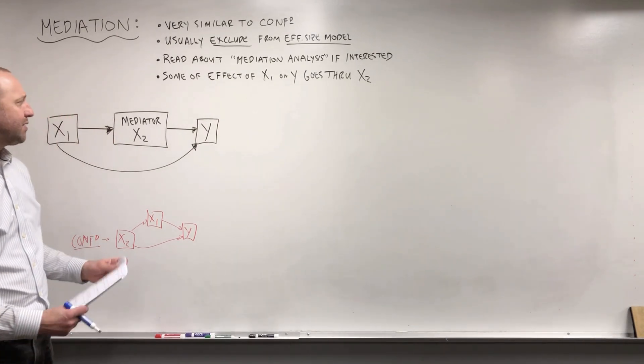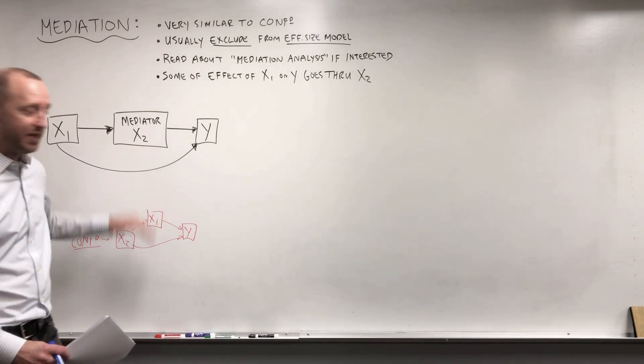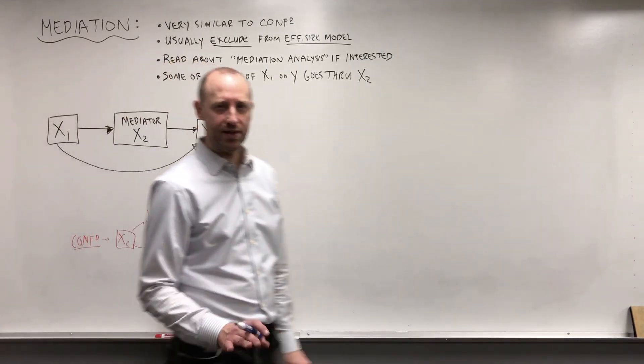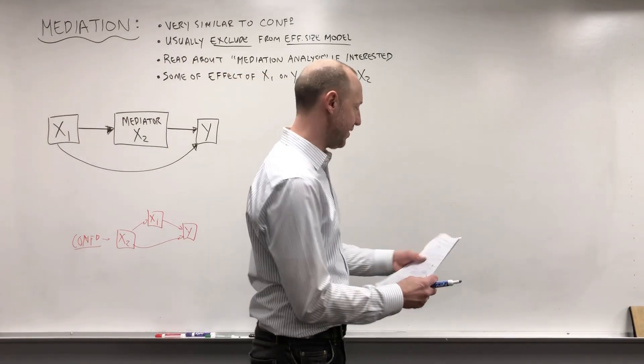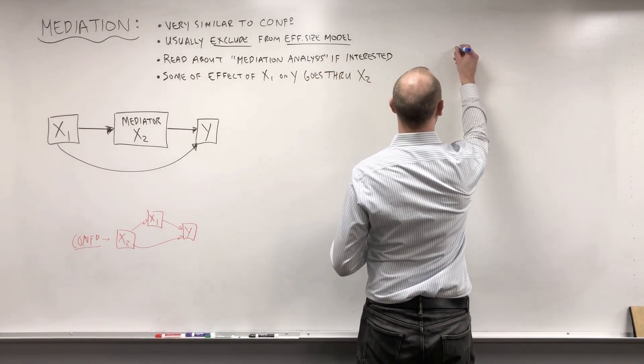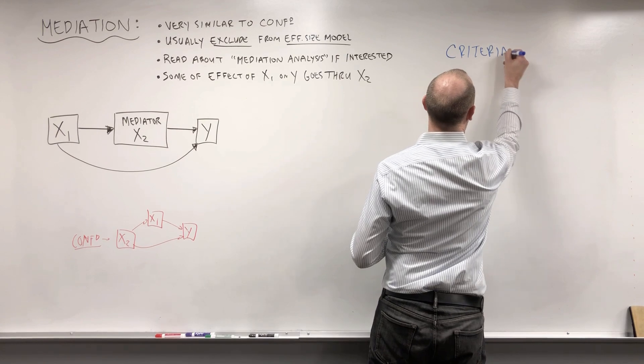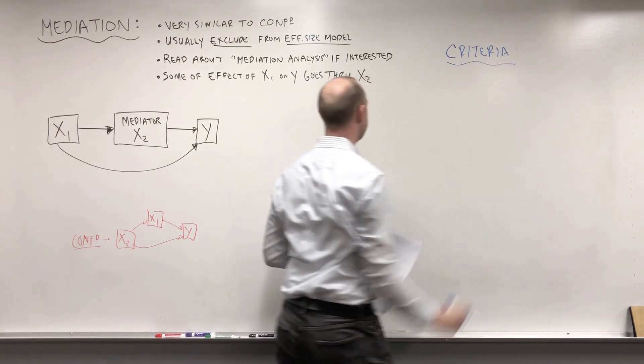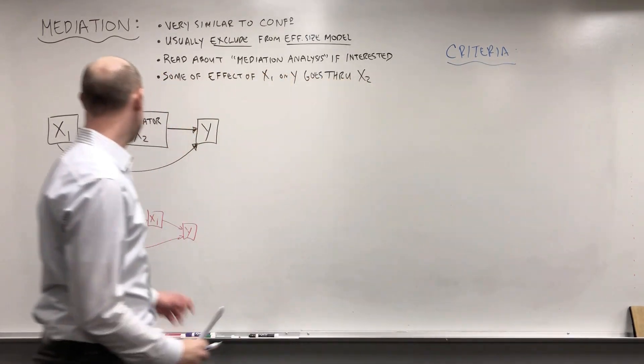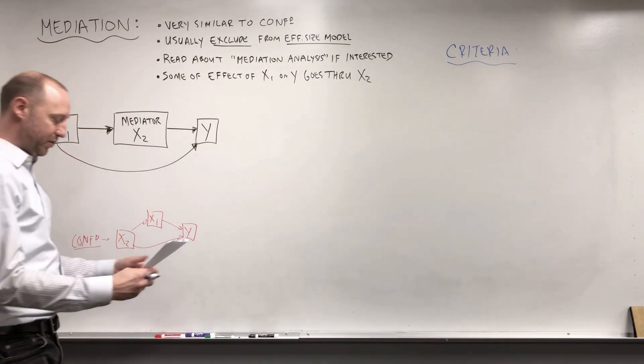First, let me just write down the criteria for mediators. And then we'll get to thinking about some conceptual examples that fit this diagram. The criteria is essentially the same as confounding, except for the nature of the association between x1 and x2.